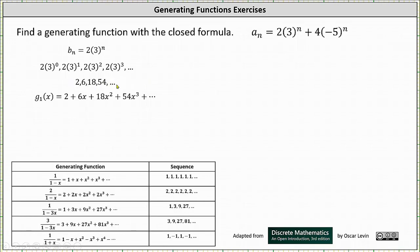From here, the generating series for the sequence is g1(x) equals 2 + 6x + 18x² + 54x³ + ... Notice on the right side we have a common factor of two. Factoring the two from the right gives us g1(x) equals two times the quantity (1 + 3x + 9x² + 27x³ + ...).